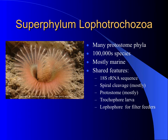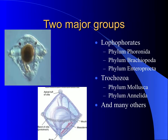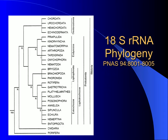Annelids are protostomes and Lophotrochozoa. They don't have a lophophore per se, but they do show trochophore larvae. Annelids are closely related to mollusks — they're segmented and appear quite different, but are closely related. This was originally based on sequencing of the 18S ribosomal RNA gene, and after that analysis, we continue to see lots of additional similarities.